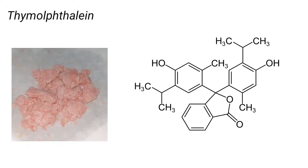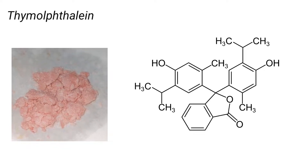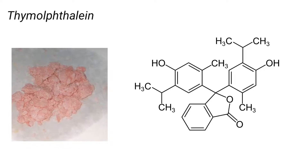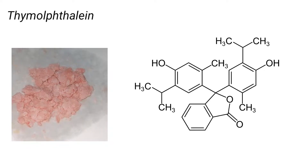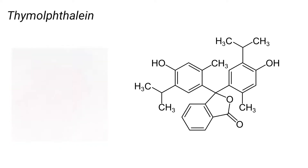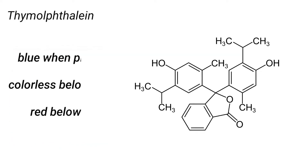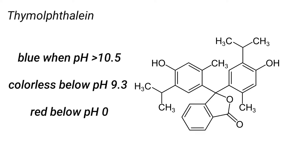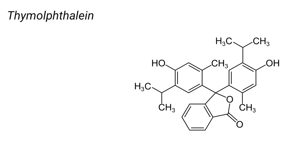Thymolphthalein is a phthalein dye formed by the reaction of thymol with phthalic anhydride. It is used as an indicator in chemistry. It gives a blue color at pH greater than 10.5. When pH comes down below 9.3, it becomes colorless. And then a red color occurs when pH goes down below zero.